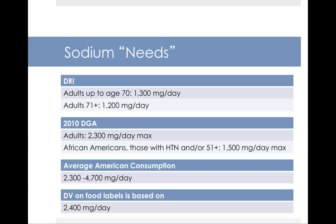How much sodium do you actually need? You need some sodium as an electrolyte to conduct nerve transmissions and keep your heart beating, but most Americans eat too much. Average American consumption is somewhere between 2,300 to 4,700 milligrams, with 3,500 milligrams often cited as the typical figure. The DRI tells you the minimum: adults up to age 70 need 1,300 milligrams, while adults age 71 and older need 1,200 milligrams per day.